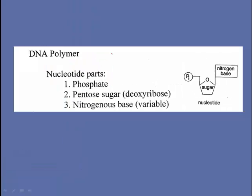A DNA polymer is also built by condensation synthesis, but we won't go into the details of that. Each monomer of the DNA polymer, or the RNA polymer, is made up of a nucleotide. The nucleotide parts are phosphate, pentose sugar, deoxyribose in the case of DNA, and a nitrogenous base, which is the variable part.